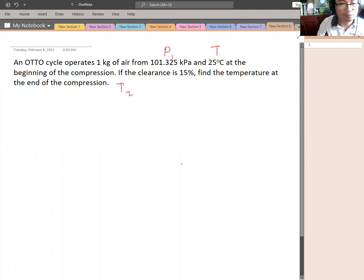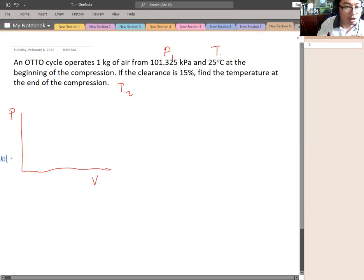So first things first, we will draw the PV diagram for our Otto cycle. So we will plot the 101.325. Plotting 101.325, this is the lowest because it is our P1. This is the point, it has a temperature of 25 degrees Celsius.